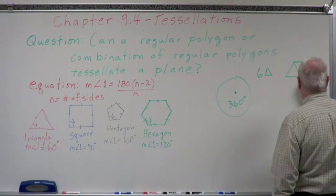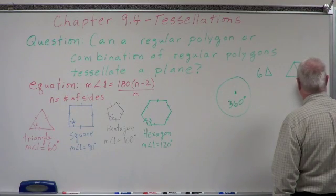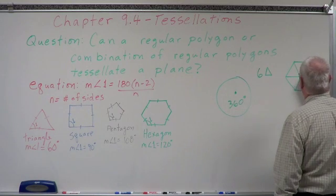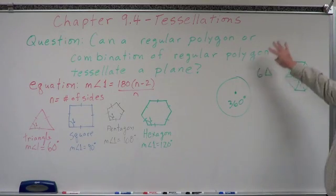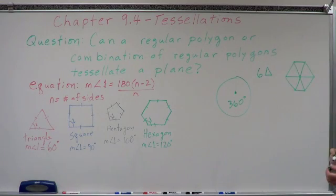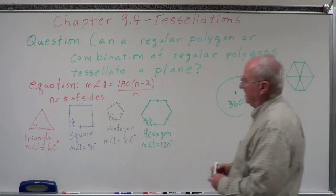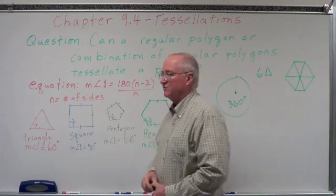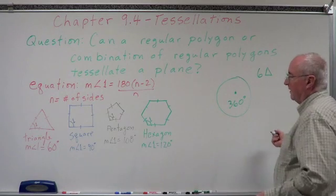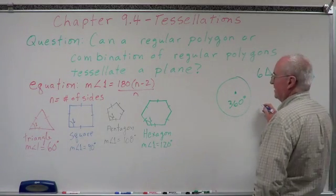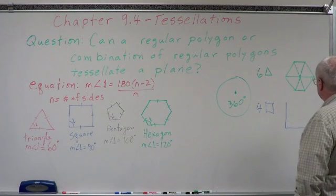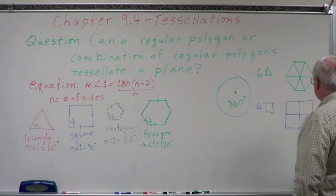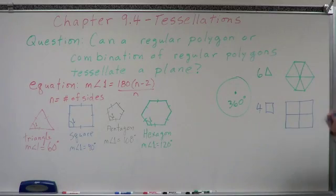Let's verify: six equilateral triangles — one, two, three, four, five, six. Yes, that works. So we can put together a set of 6 equilateral triangles, keep putting those together, tessellate them, transform them, and create a tessellation of a plane. Now let's try a square — 90 goes into 360 four times. So we can take four squares, put them together, and that tessellates a plane.